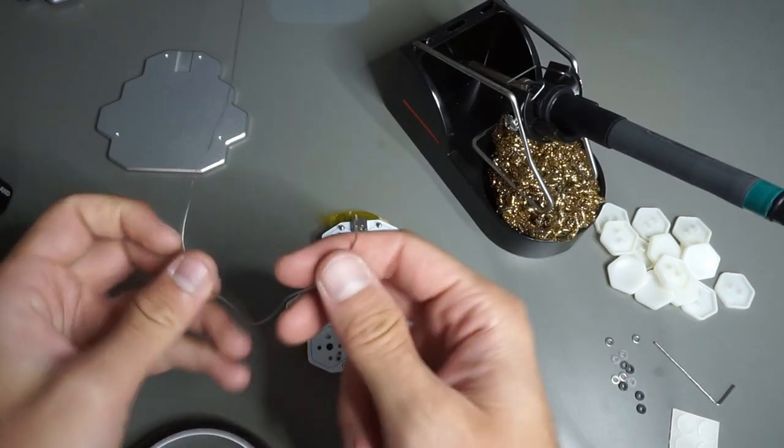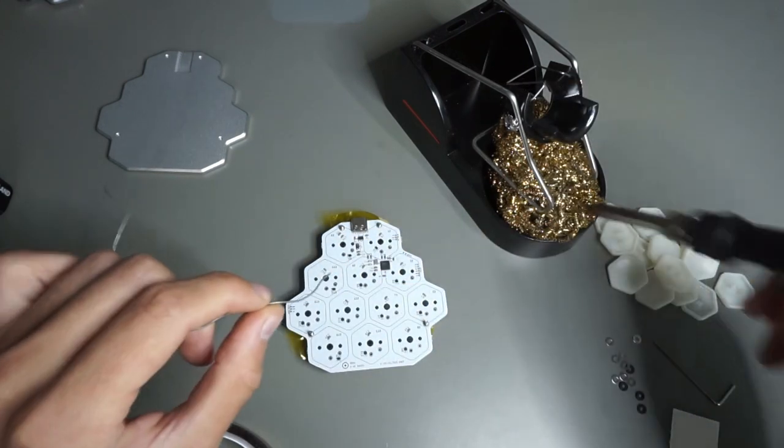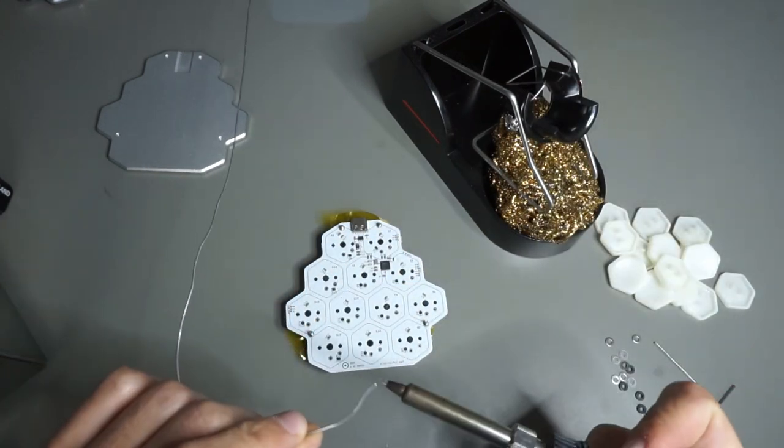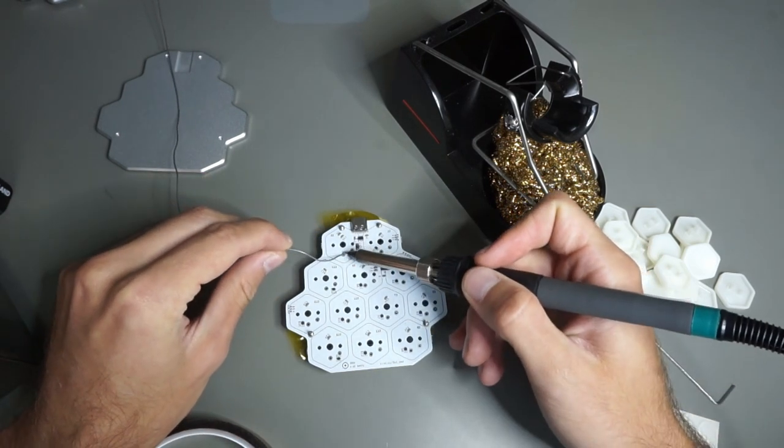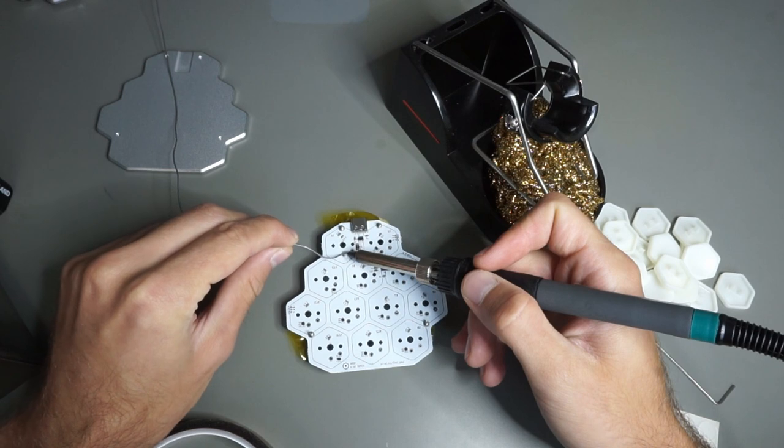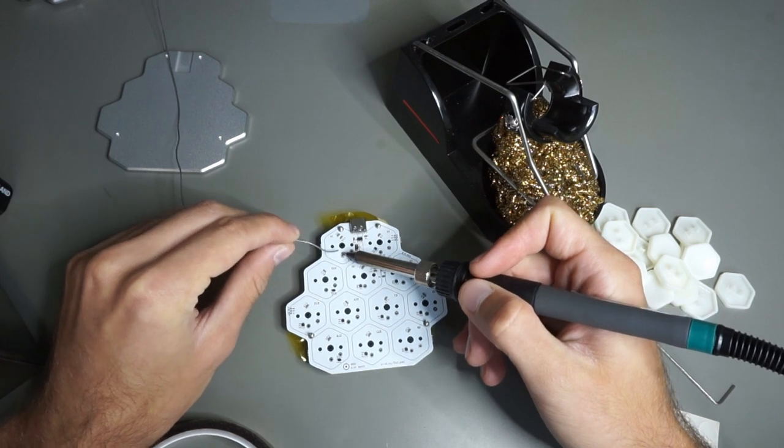So now it's time to solder. I'm going to get out a soldering iron and just solder each of the 12 keyswitches in place. Each of them has two legs, so that's 24 little solder joints to solder.